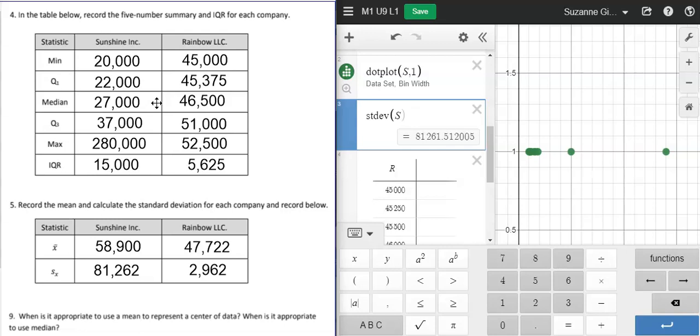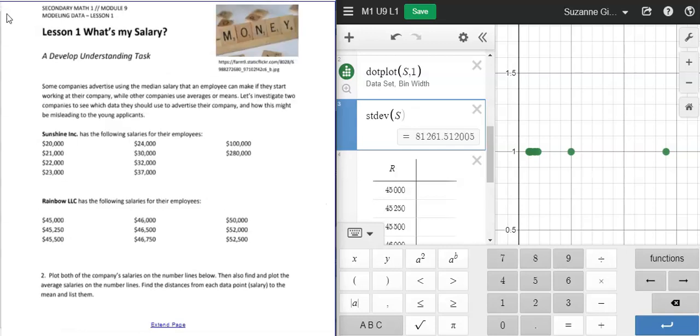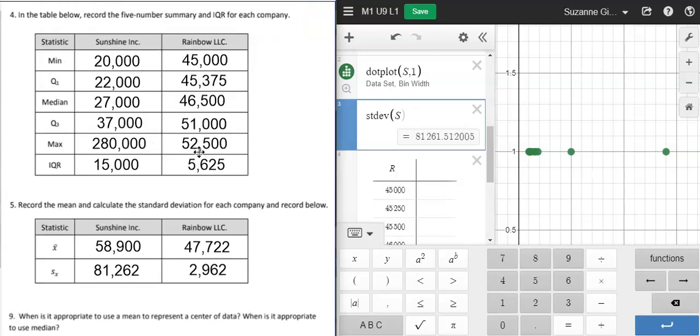If we return to our data, we're looking at our data here, we can see that in Sunshine's data, there's this $280,000 number that has made the average go up, but not the median.